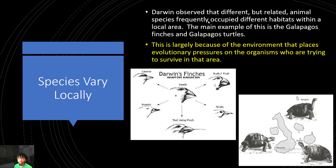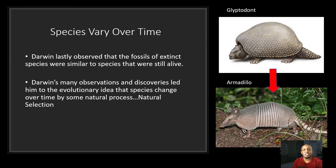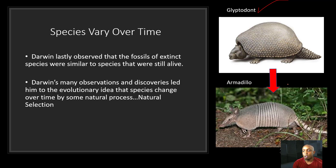If an organism does not adapt to its environment, then it will most likely not live too long. Darwin lastly observed that the fossils of extinct species were similar to species that were still alive, and this led him to the conclusion that species vary over time. Darwin's many observations led him to the evolutionary idea that species change over time by some natural process — this is natural selection. For example, the glyptodont is now extinct, but it's very similar looking to the present day armadillo. The glyptodont has a hard shell and a hard tail for protection, and the present day armadillo has a hard shell and hard tail for protection as well. The glyptodont actually evolved into the present day armadillo over time through the process of natural selection.